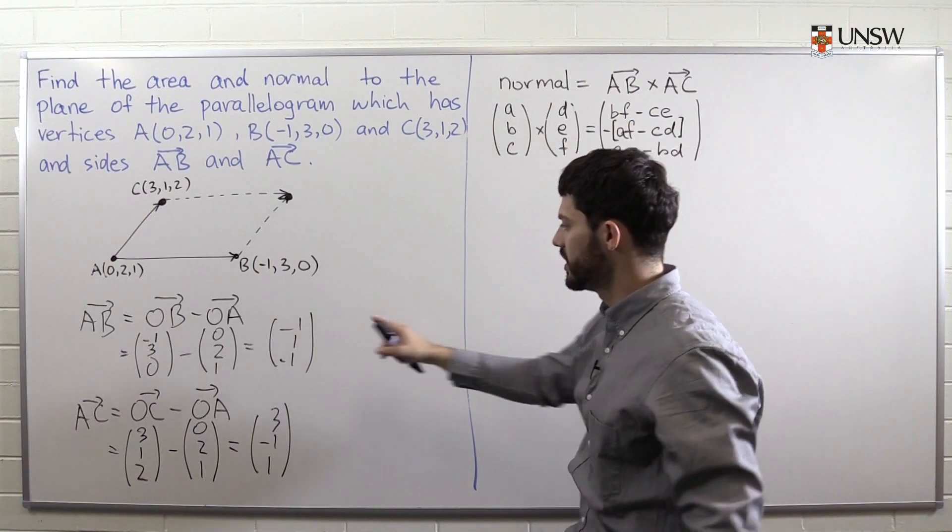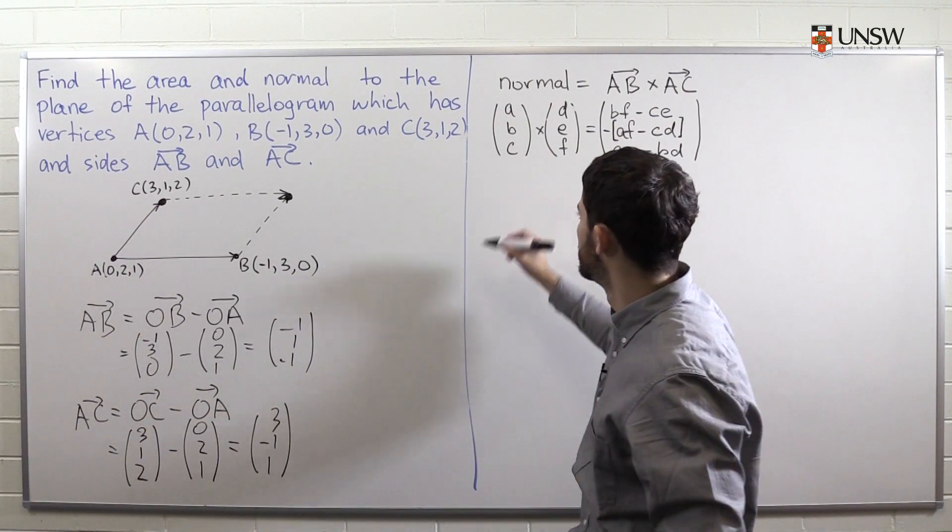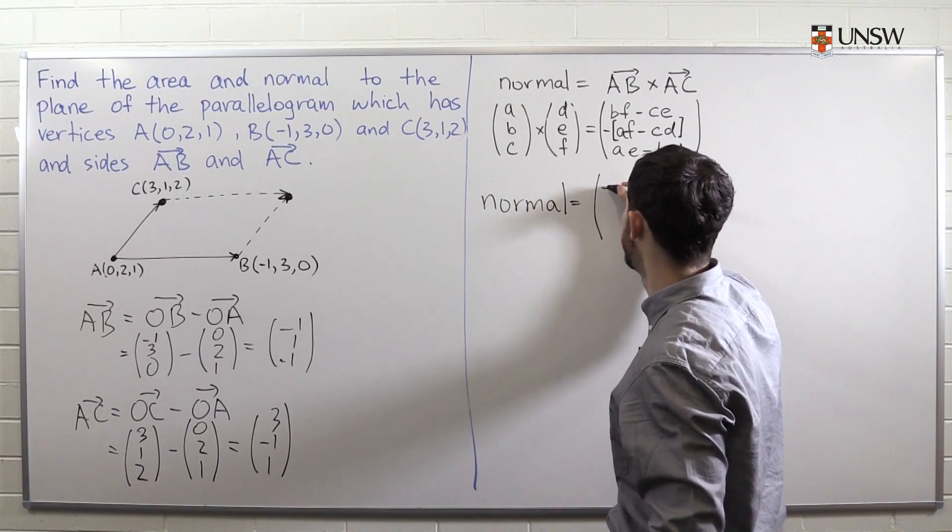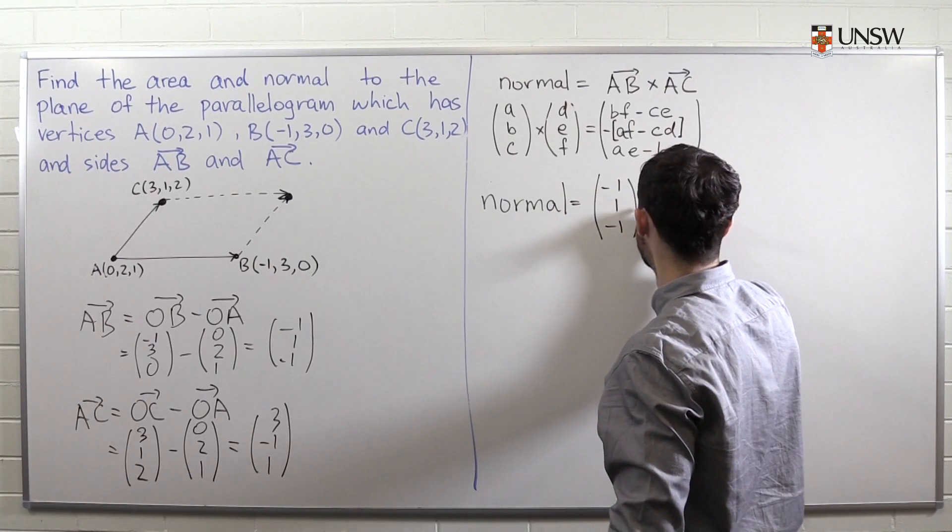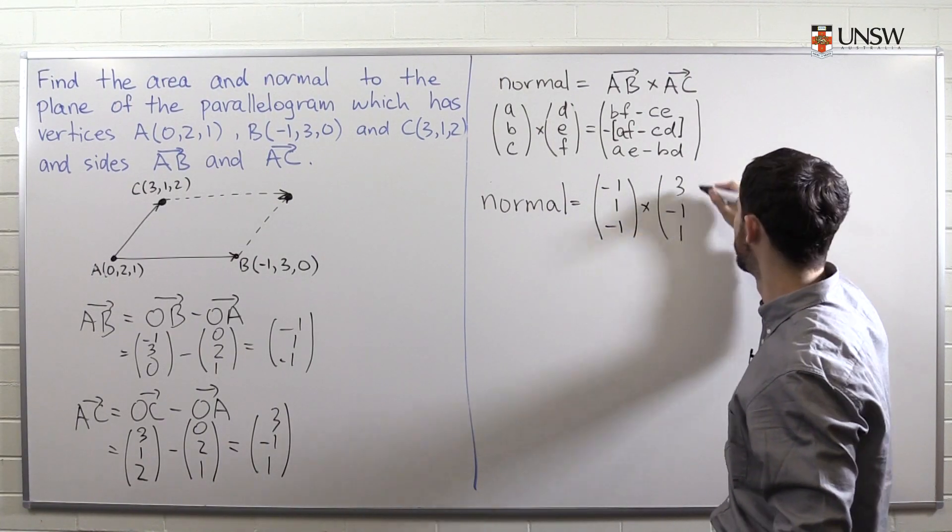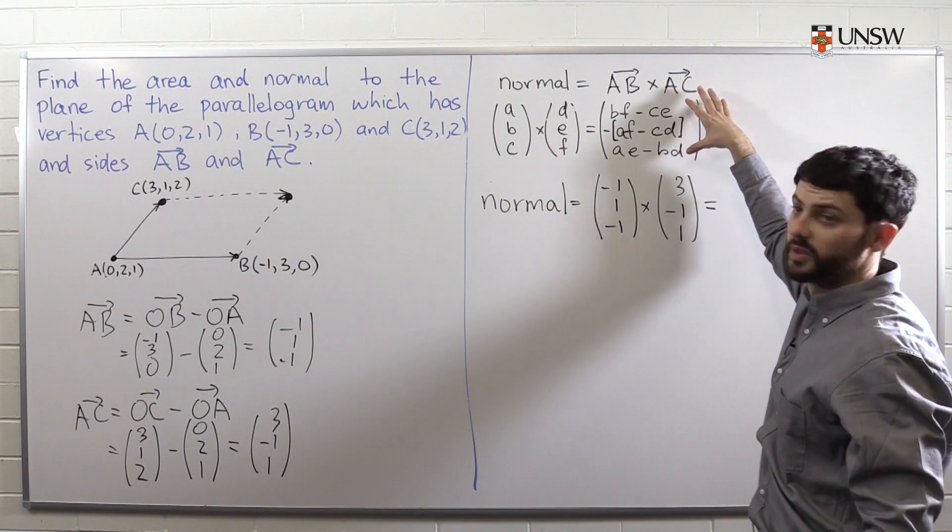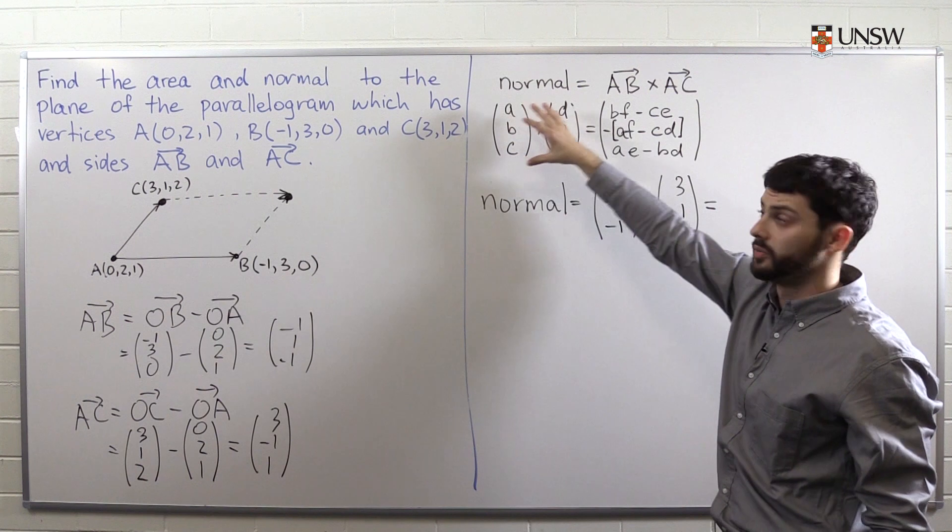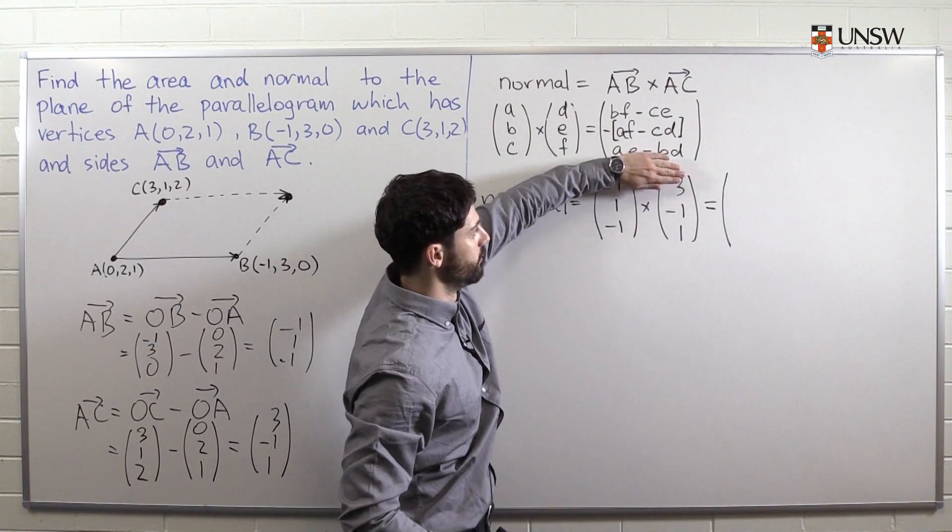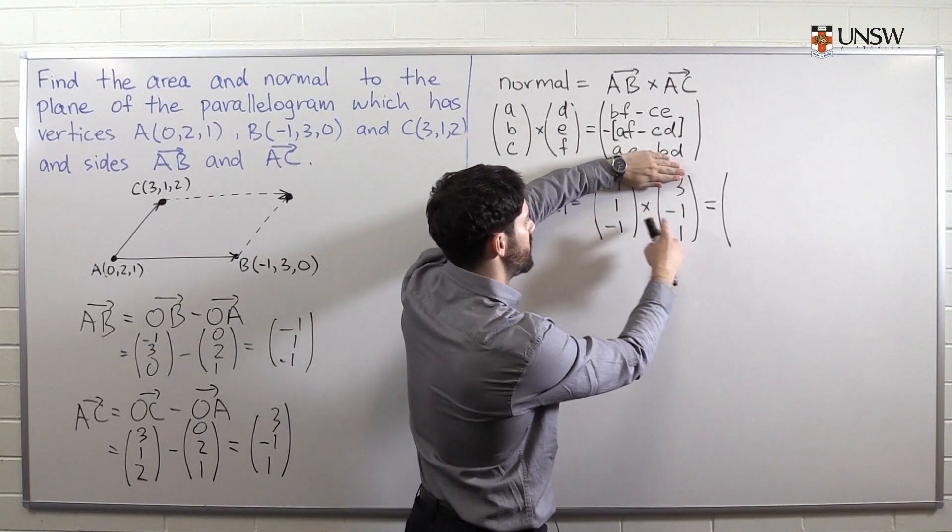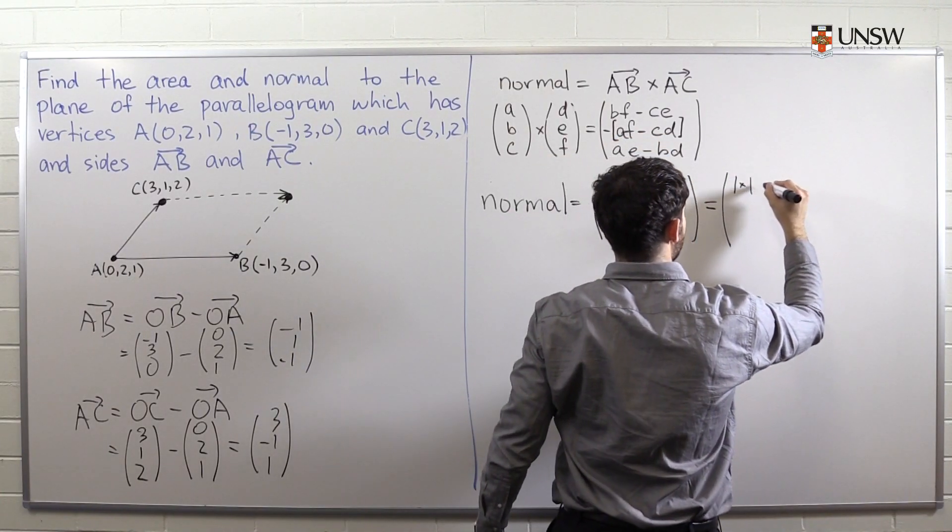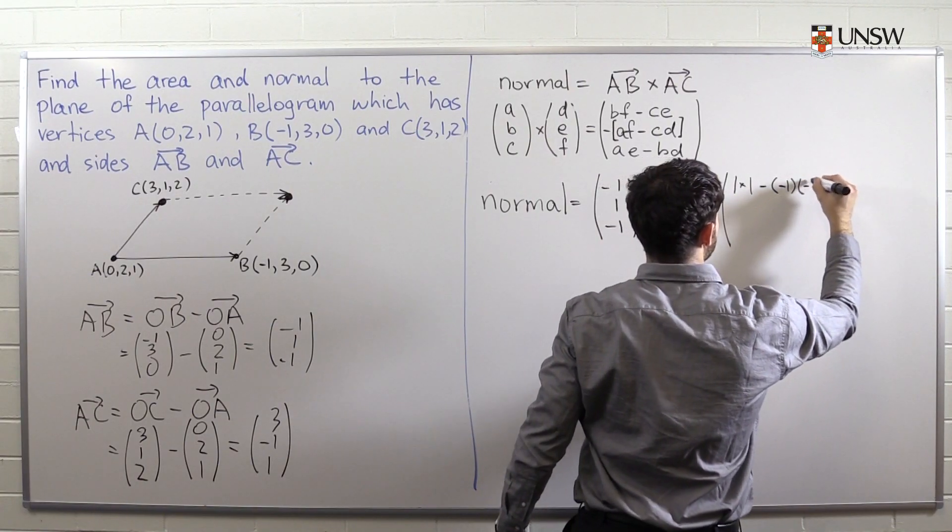Okay. So let's apply this procedure to finding the normal to these two vectors. So we need to find the cross product of (-1, 1, -1) with (3, -1, 1). So let's apply the same procedure that we did in the general case. We ignore the first row. We do one times one minus minus one times minus one.